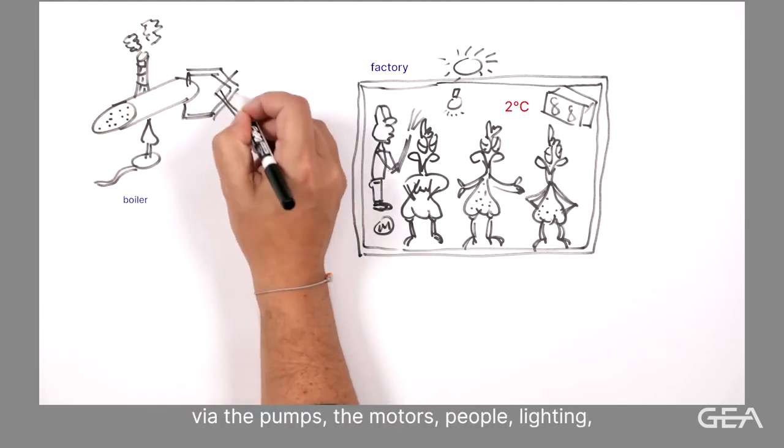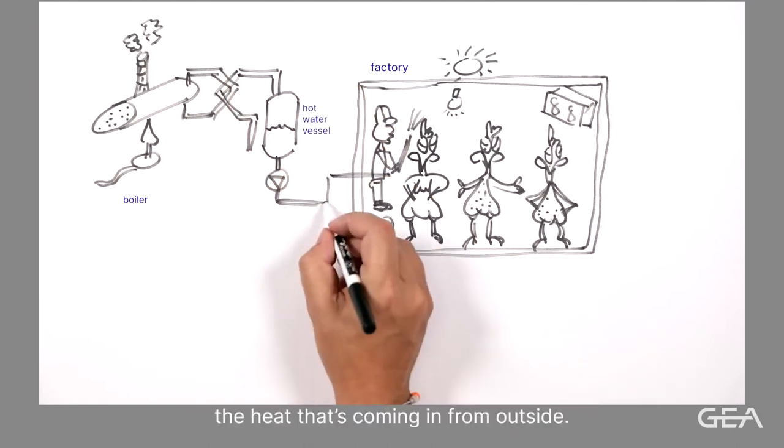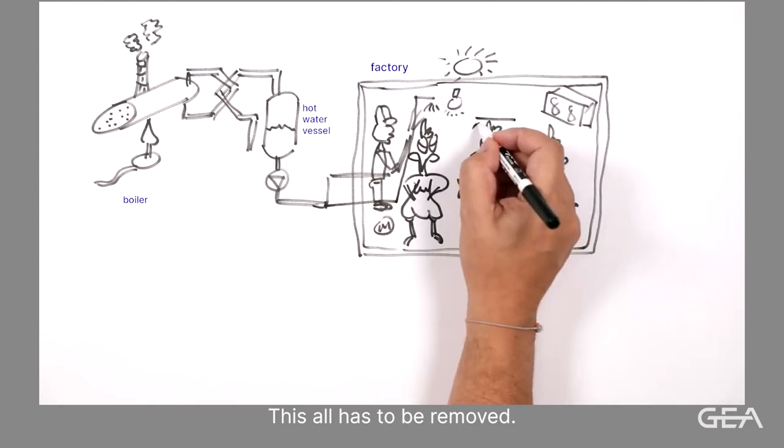So the factory is held typically at about 2 degrees. So we have to remove the energy that's put in via the pumps, the motors, people, lighting, the heat that's coming in from outside. This all has to be removed.